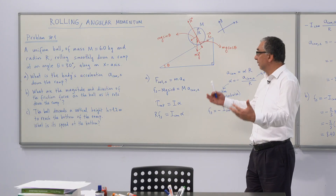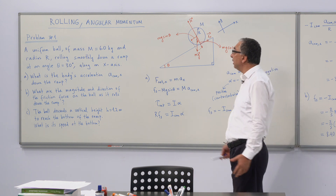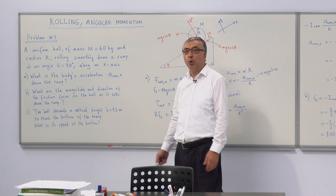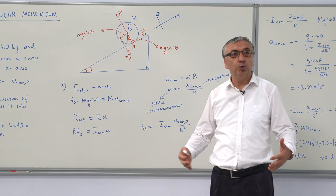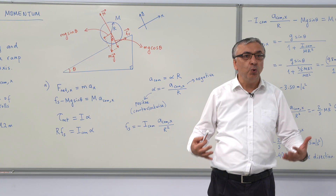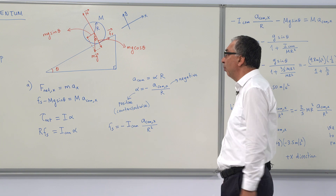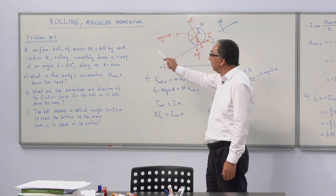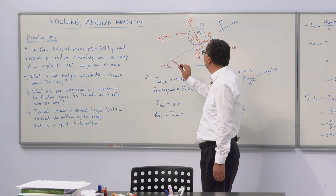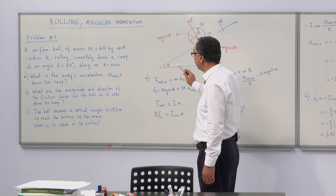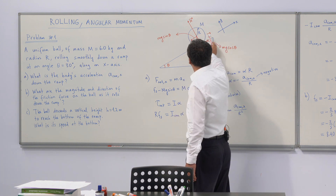In the second lecture we studied rolling torque and angular momentum. We are going to solve two examples about rolling and angular momentum. This is the first problem.